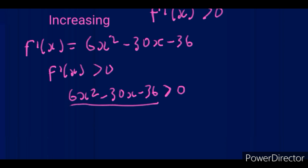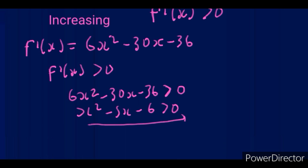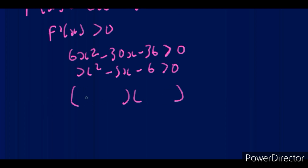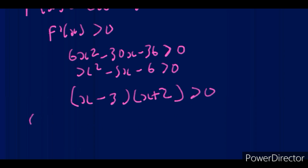Substituting, we have 6x² − 30x − 36 > 0. Since everything is divisible by 6, we divide by 6, getting x² − 5x − 6 > 0. This is just like solving quadratic inequalities in algebra. When we factorize we end up with (x − 3)(x + 2) > 0. The sign of the middle number goes to the bigger number. To find the critical values: x = 3 or x = −2. Then draw a number line with the smaller value (−2) on the left and larger (3) on the right. The signs will always be: negative, positive, positive (−, +, +).